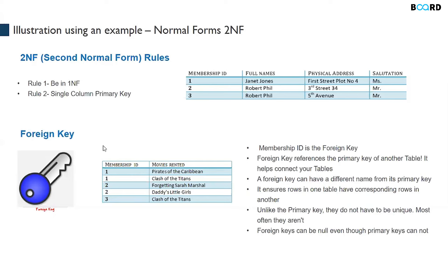Now let's talk about foreign key. There is another table which has membership ID and movies rented. This membership ID and this membership ID are the same. A foreign key references the primary key of another table — it helps you connect two tables and establish a relationship between them.